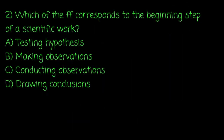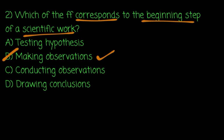Which of the following corresponds to the beginning step of a scientific work? So scientific work or scientific research — observation. Background research. Then hypothesize. Prediction. Hypothesis and prediction are different.